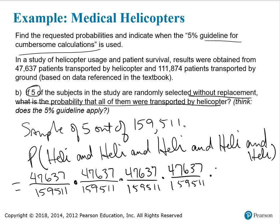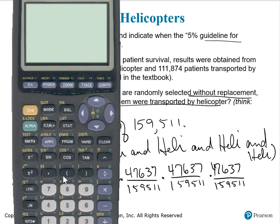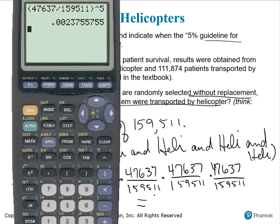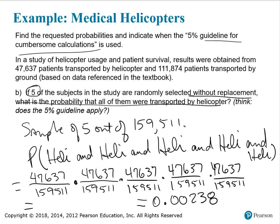Because I can use exponents to find that product, I'll type into the calculator: (47,637 divided by 159,511) raised to the 5th power, which gives the probability that all five would have been transported by helicopter: 0.00238. It's a very small probability that all five would be transported by helicopter. The point is that I didn't have to reduce those fractions because the sample I was selecting was very small in comparison to the total number of patients.